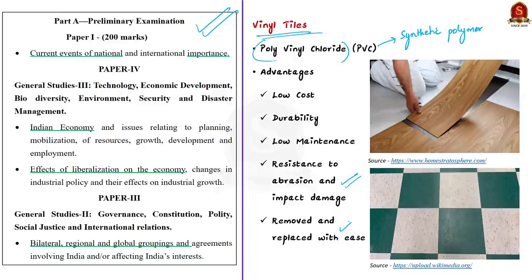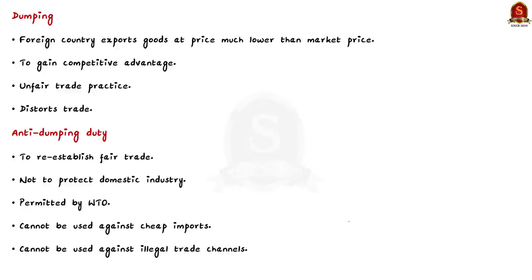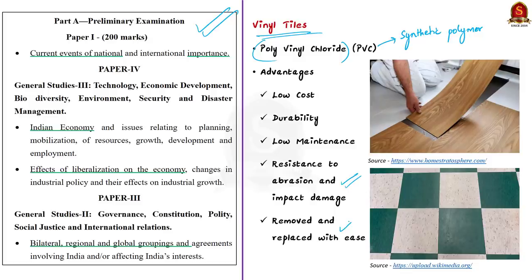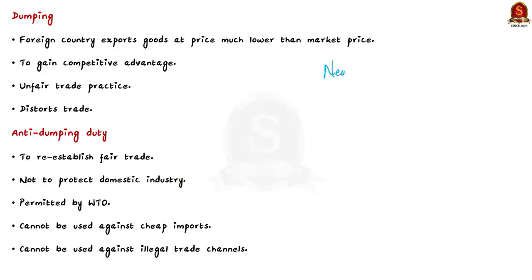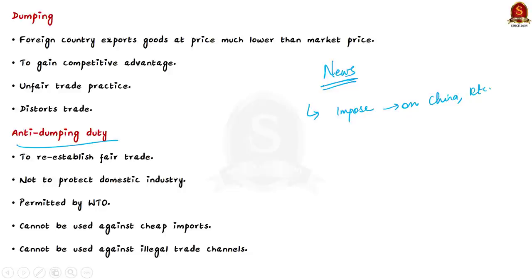Regarding the issue: a private company has filed a petition with the Directorate General of Trade Remedies, which is under the Ministry of Commerce. In this petition, the company has asked the directorate to impose anti-dumping duties on the import of vinyl tiles from China, Taiwan, and Vietnam, arguing that the dumping of low-cost vinyl tiles from these countries is affecting domestic industries.